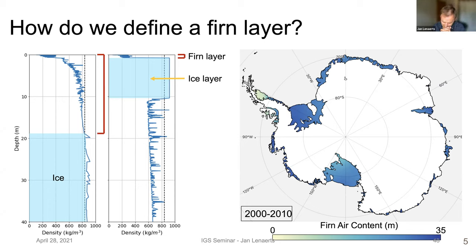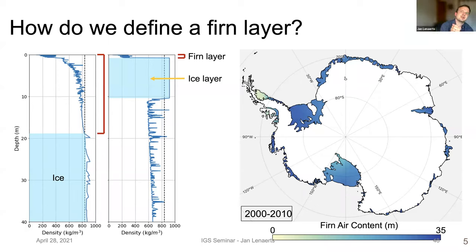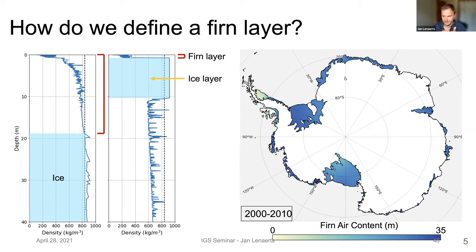What would 35 meters correspond to as a percentage or relative volume of air? That's hard to say because it depends on both density and the thickness of the firn layer. It scales roughly linearly with how much pore space you have. If you have a firn layer of 100 meters thick and an air content of 35 meters, that means a porosity of about 35%.